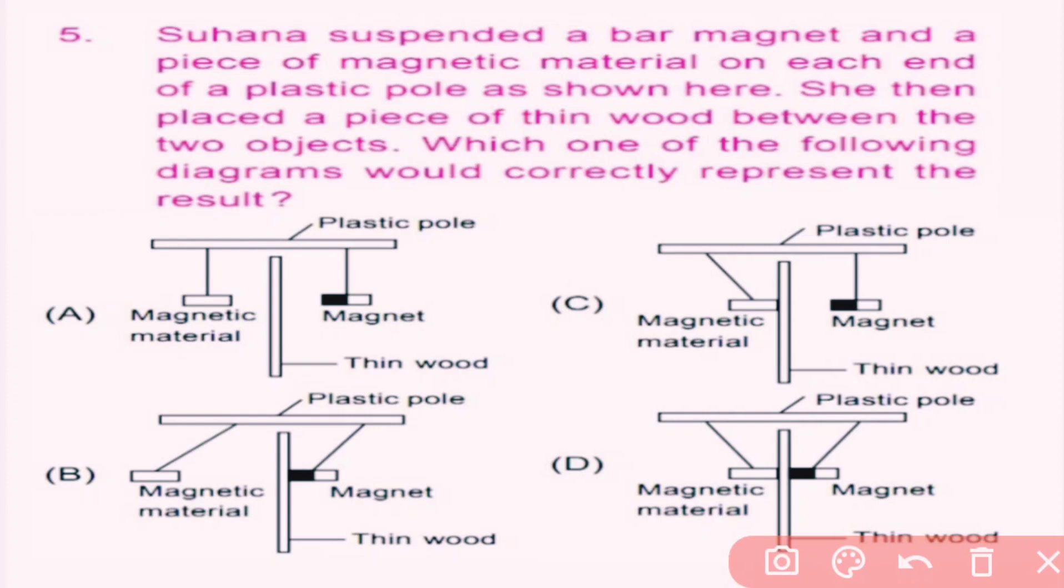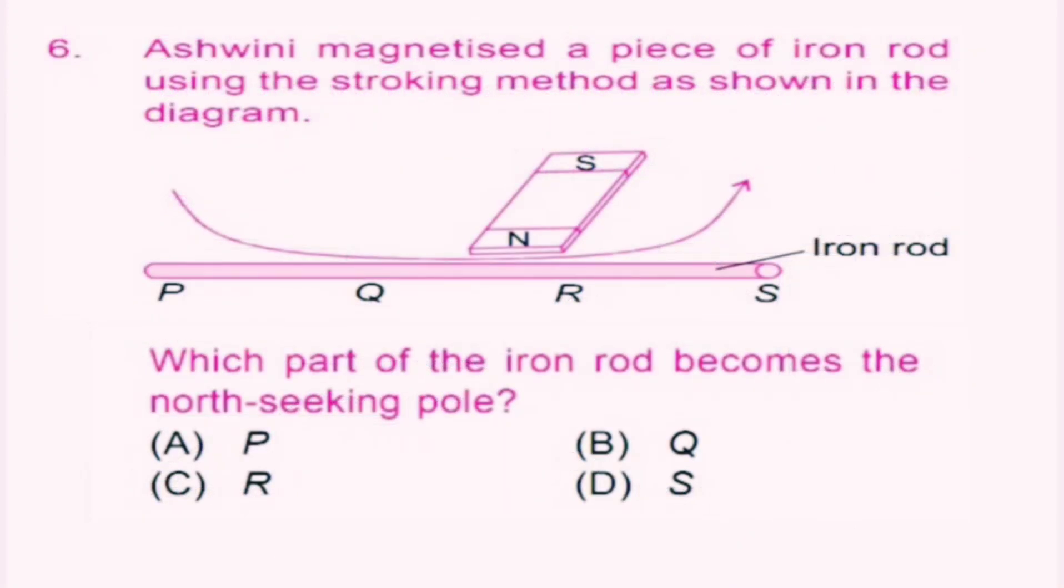Question number 6. Ashwini magnetized a piece of iron rod using the stroking method as shown in the diagram. Which part of the iron rod becomes the north-seeking pole?